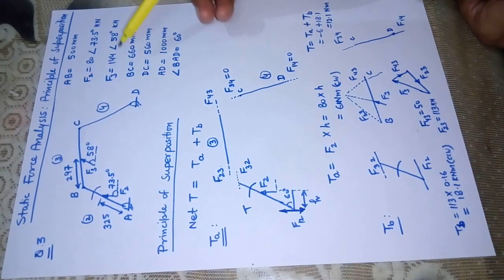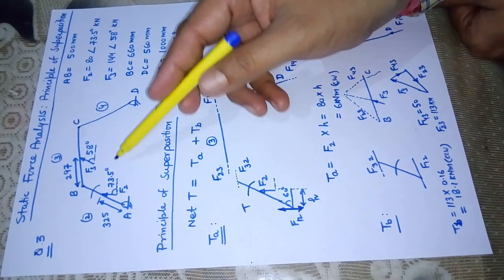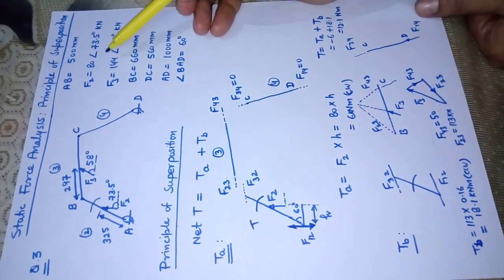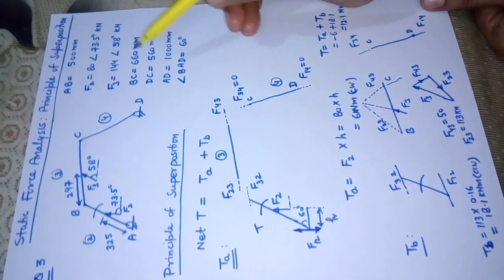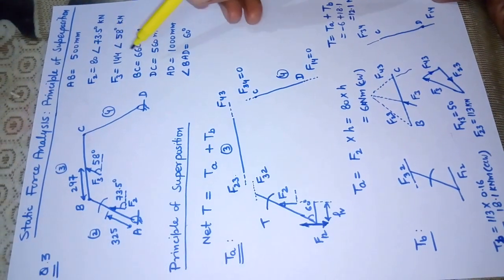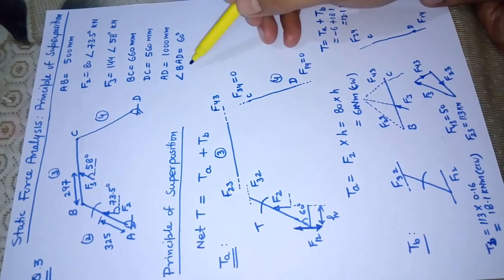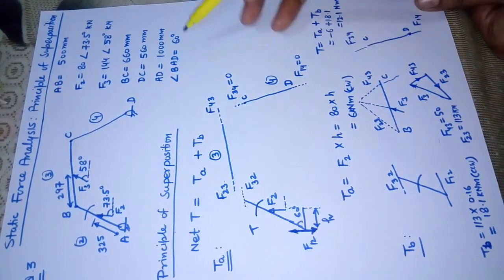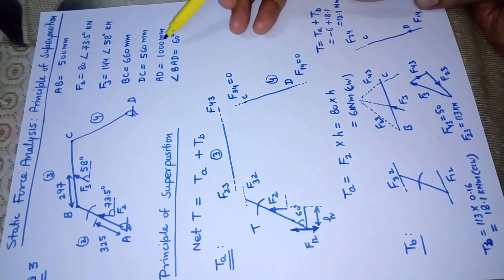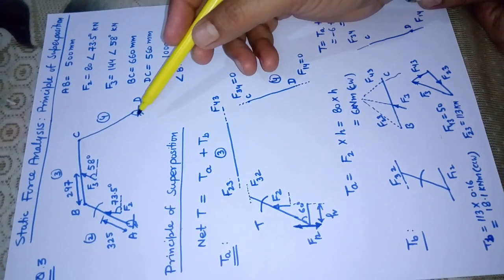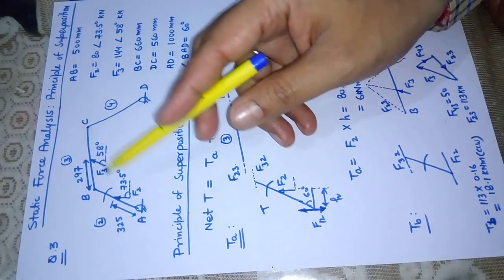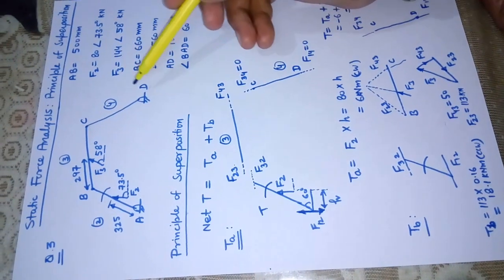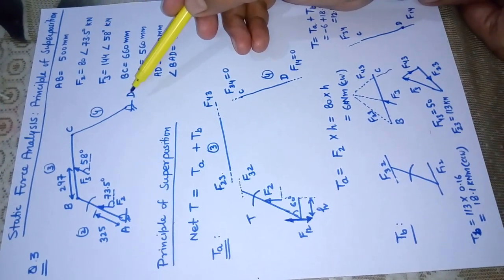The given dimensions are as shown in the figure. The link lengths are also given, along with the directions of forces F2 and F3, link lengths of AB, BC, DC, AD, and angle BAD, which is given as 60 degrees. As we did in earlier problems, we will first make the configuration diagram of the four-bar mechanism taking a suitable scale, with appropriate angles as given in the figure.